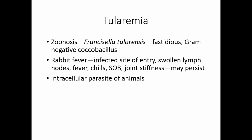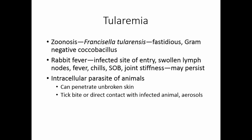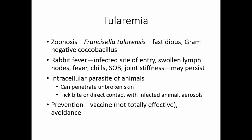Francisella tularensis is an intracellular parasite of animals. It can penetrate unbroken skin, which is what makes it so dangerous. It can be transmitted through a tick bite, direct contact with infected animal meat, or through aerosols — for example, when hunters field dress their kill and pull the skin off, creating an aerosol that can carry the organism. There is a vaccine available, but it's not totally effective. Treatment is streptomycin or gentamicin, which are effective but slightly toxic to humans.